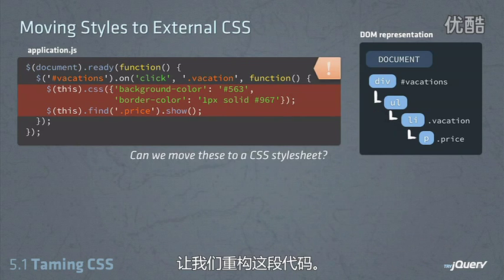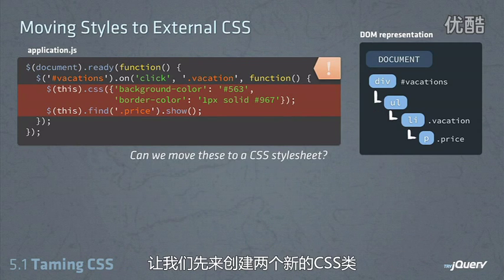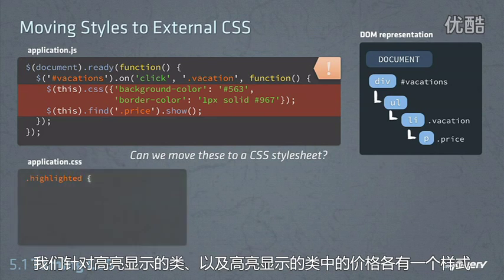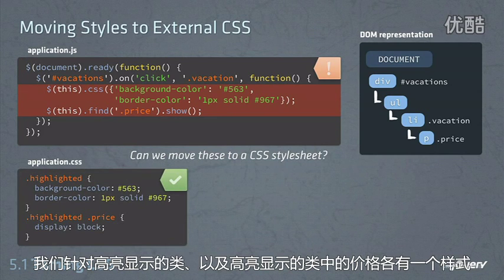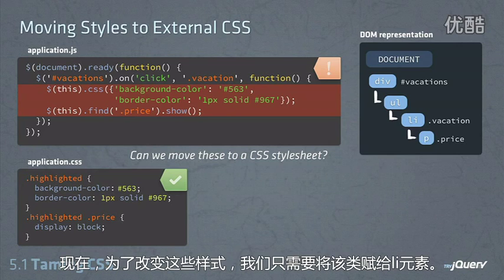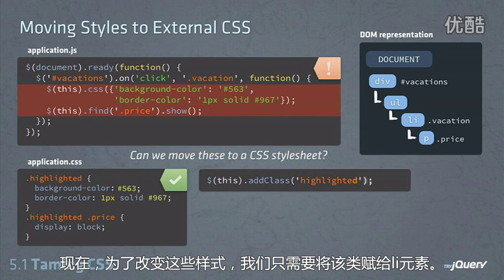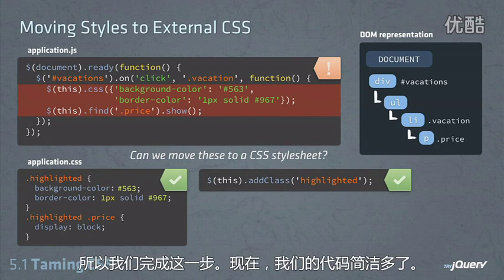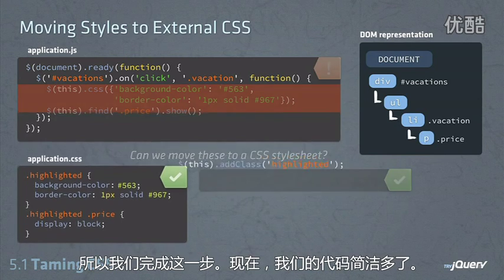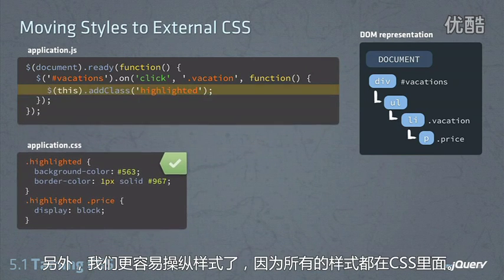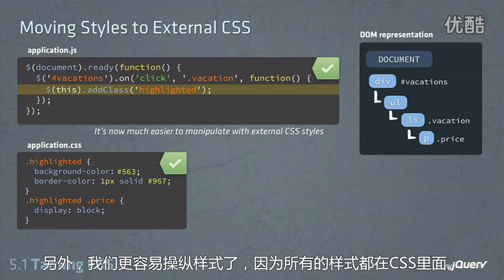Let's refactor this code to do that. Let's create two new classes: a style on the highlighted class and a style on the price inside the highlighted class. Now, in order to make these style changes, all we have to do is add this class to our li. And now our code is a lot cleaner, plus it's much easier to manipulate the style because all of our styles are in CSS.